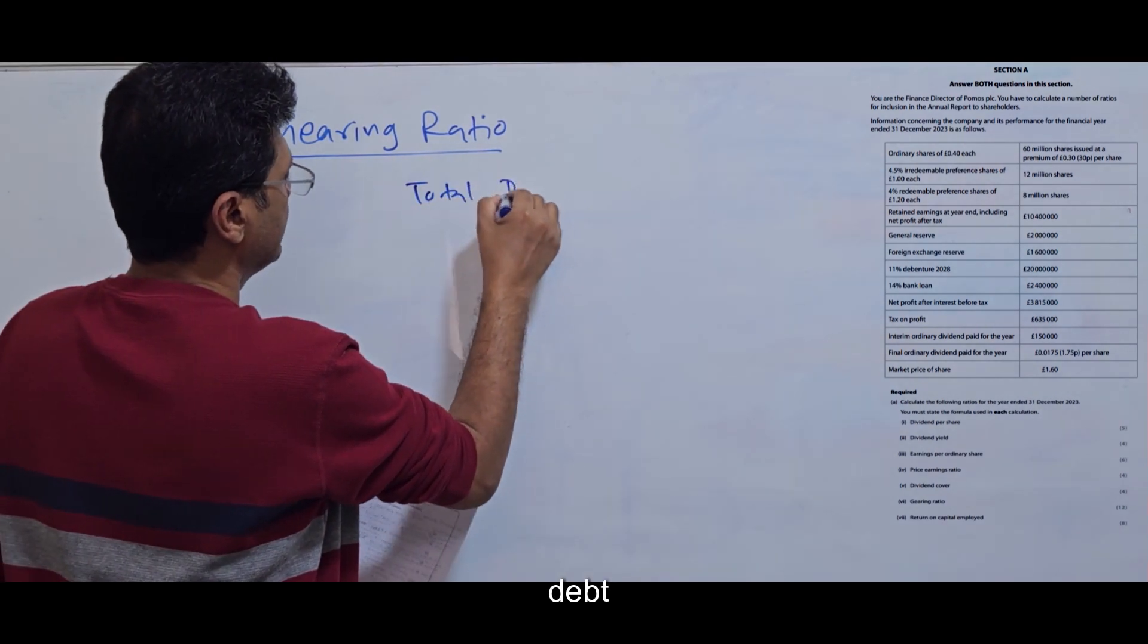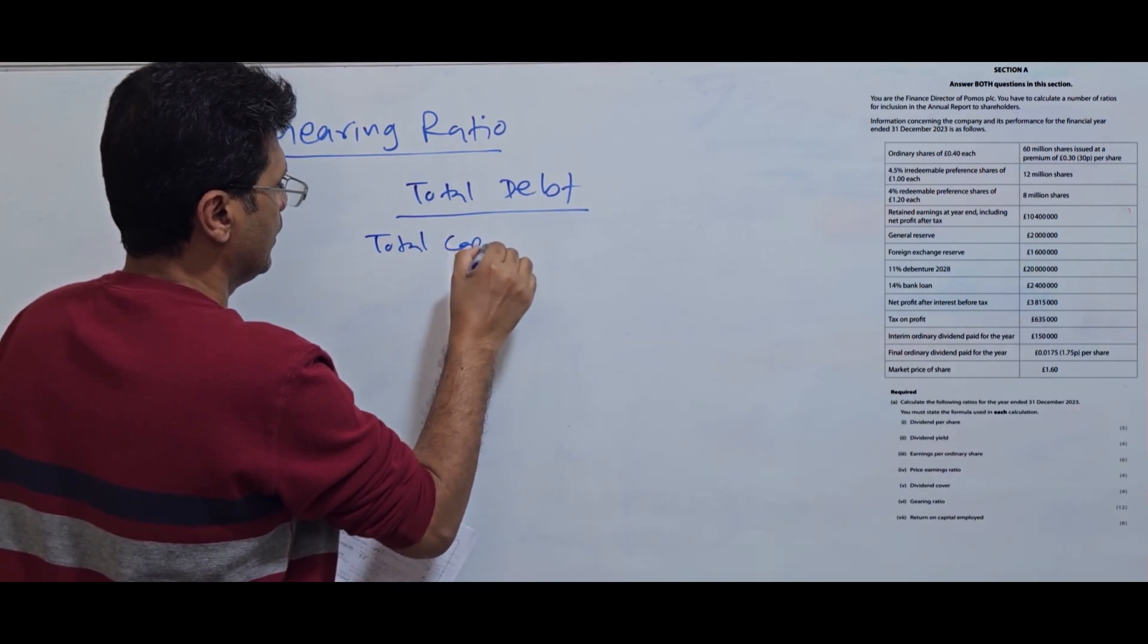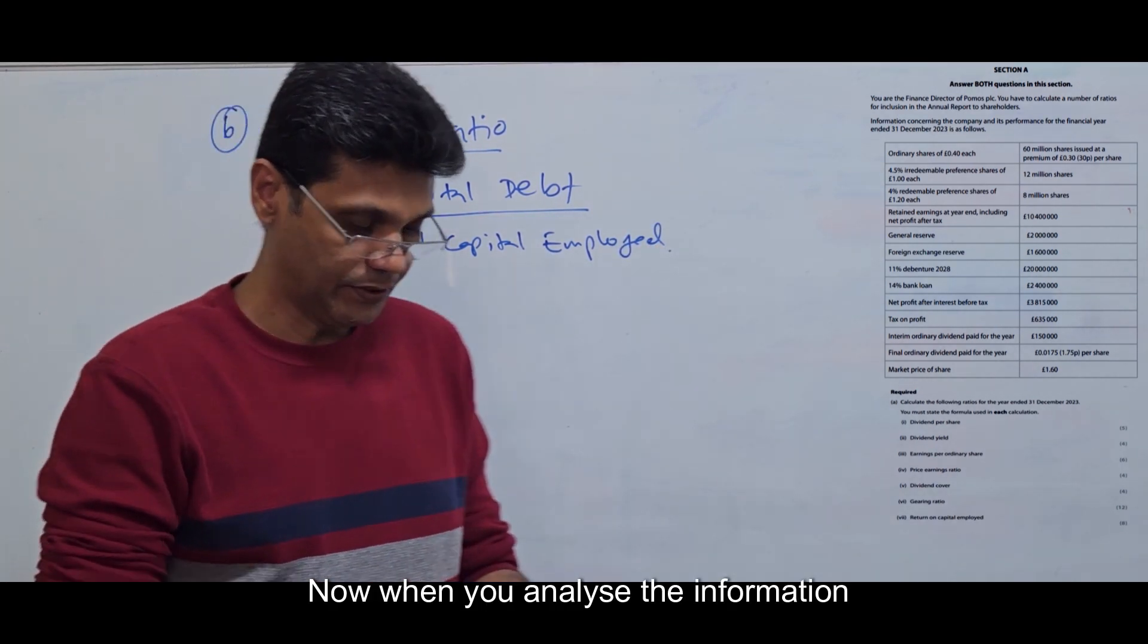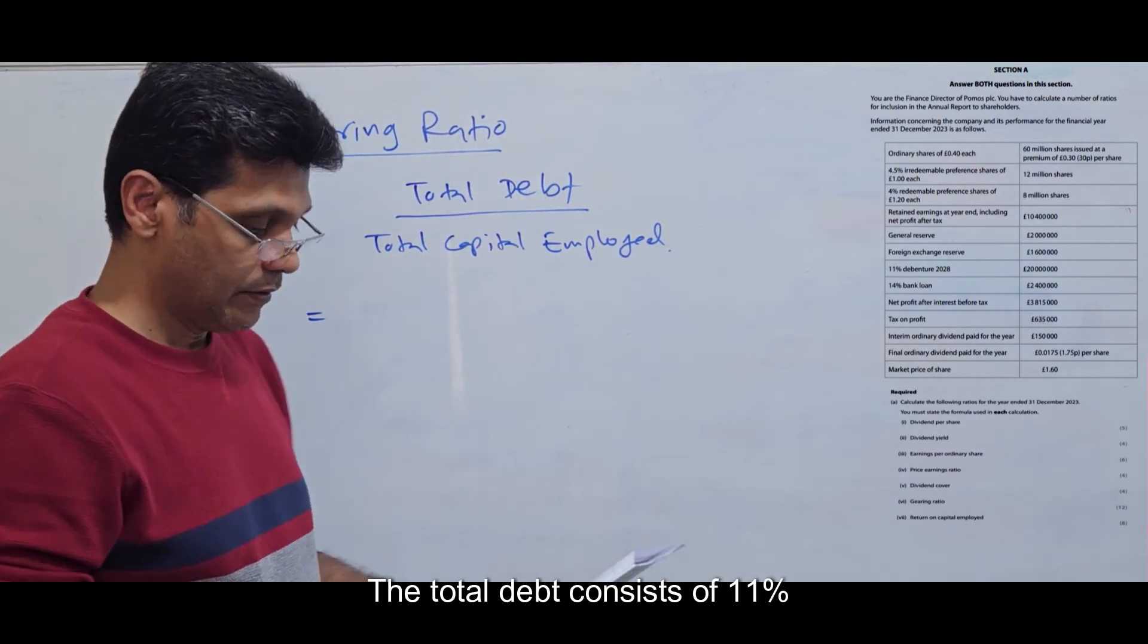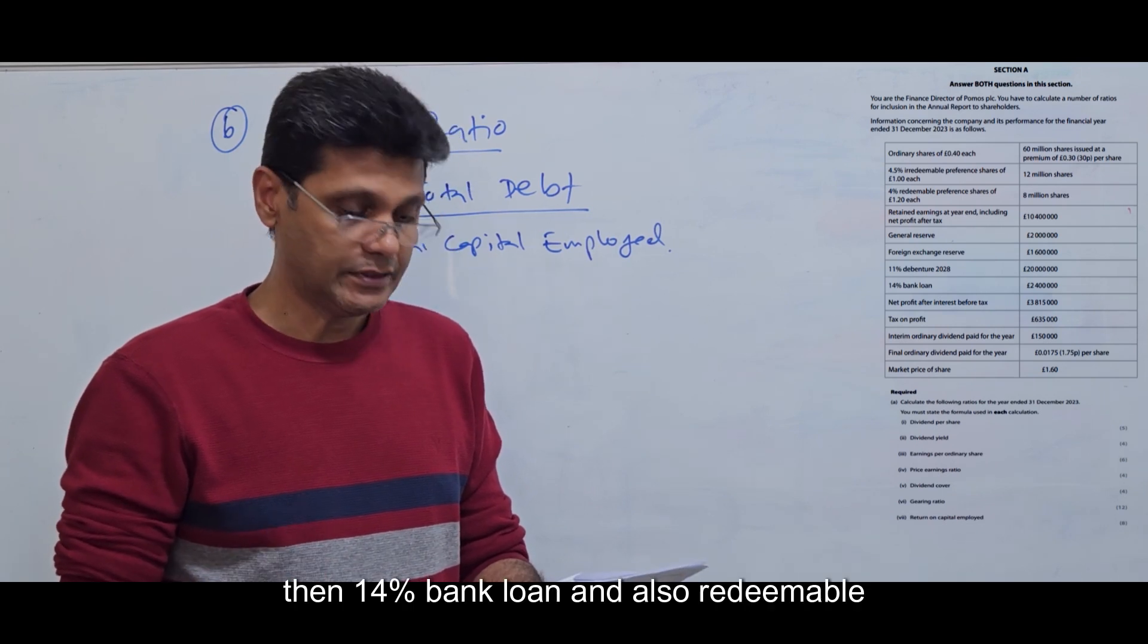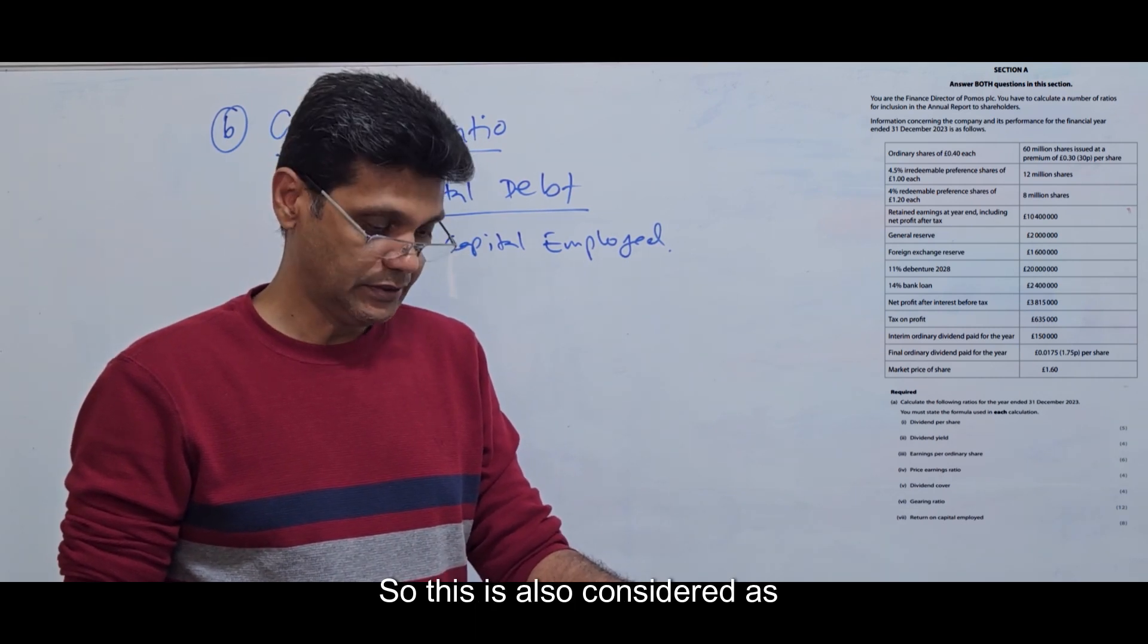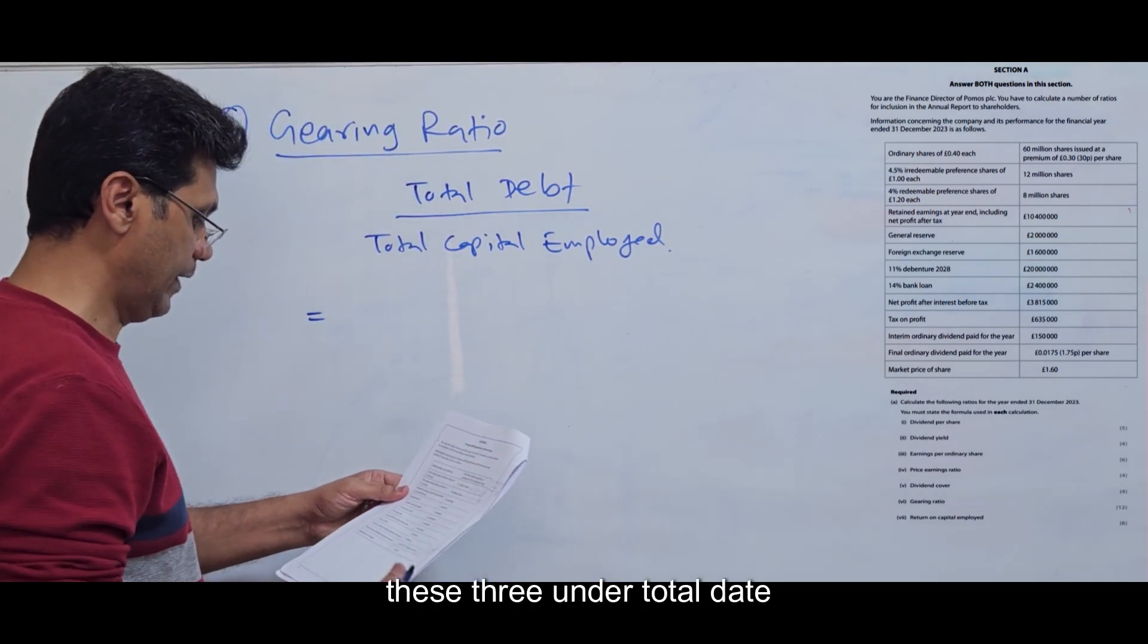You have to take total debt divided by total capital employed. When you analyze the information, you can see the total debt consists of 11% debentures, 40% bank loan, and redeemable preference shares. This is also considered as a debt, so we need to consider these three under total debt.